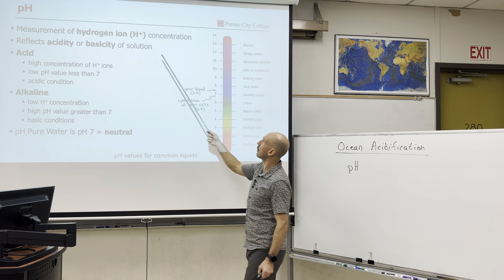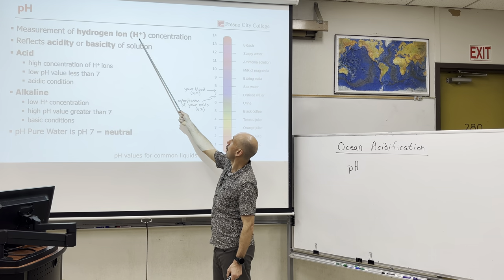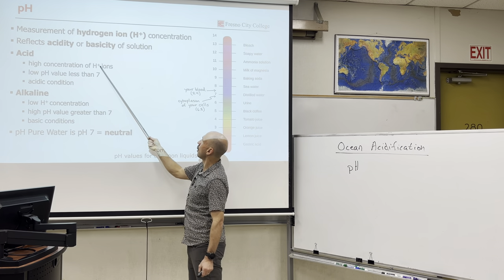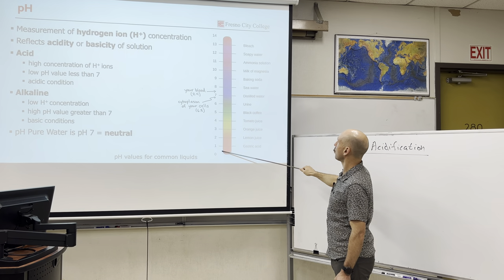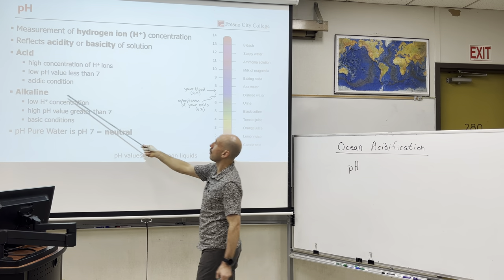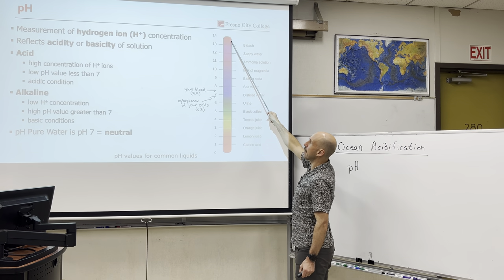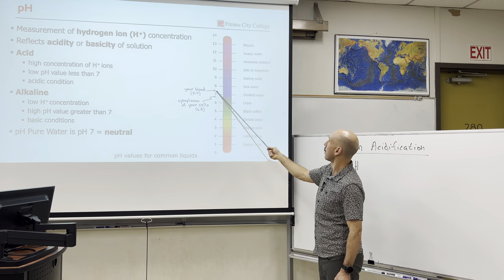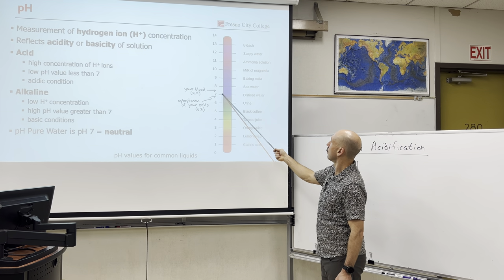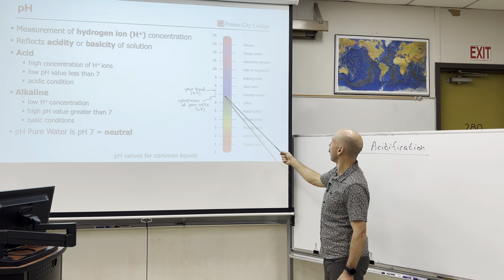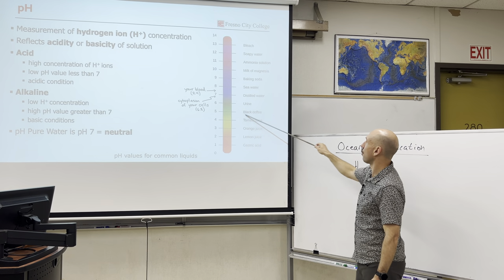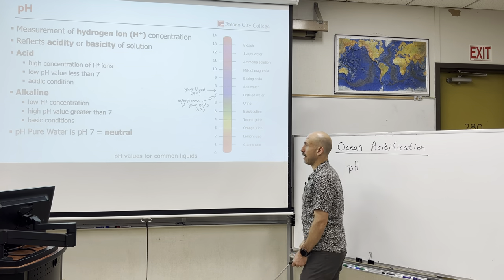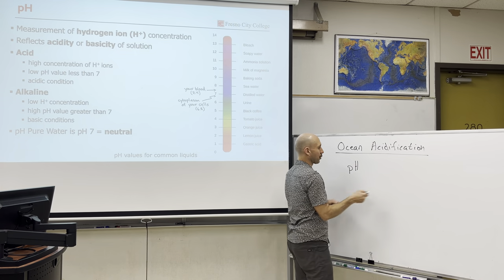Hydrogen ions are basically pH. pH is a measure of hydrogen ion concentration. When you have high concentrations of hydrogen ions, you have a low pH and acidic conditions. When you have low concentrations, you have a basic condition — we call this alkaline. Water is neutral at seven. Our blood is slightly alkaline, our cytoplasm is slightly acidic. Coffee, tomato juice, orange juice, and gastric acid are all acidic. Seawater is slightly alkaline, and bleach is very alkaline.